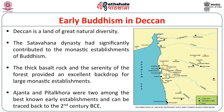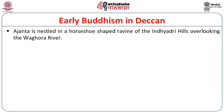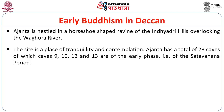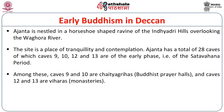Deccan is a land of great natural diversity. The Satavahana dynasty had significantly contributed to the monastic establishments of Buddhism. The thick basalt rock and the serenity of the forest provided an excellent backdrop for large monasteries. Ajanta and Pitalkhora were two among the best-known early establishments, traceable as far back as the 2nd century BCE. Ajanta is nestled in a horseshoe-shaped ravine of the Indyadri hills overlooking the Vaghora river — a place of tranquility and contemplation. Ajanta has a total of 28 caves, of which caves 9, 10, 12 and 13 are of the early phase.